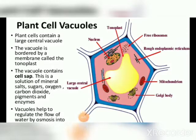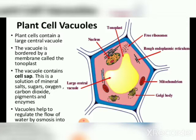The fluid present in the sap vacuoles is often called sap or vacuolar sap. It contains minerals, salts, sugars, amino acids, esters, proteins, waste products, and water-soluble pigments called anthocyanin. Some crystalline deposits also occur.